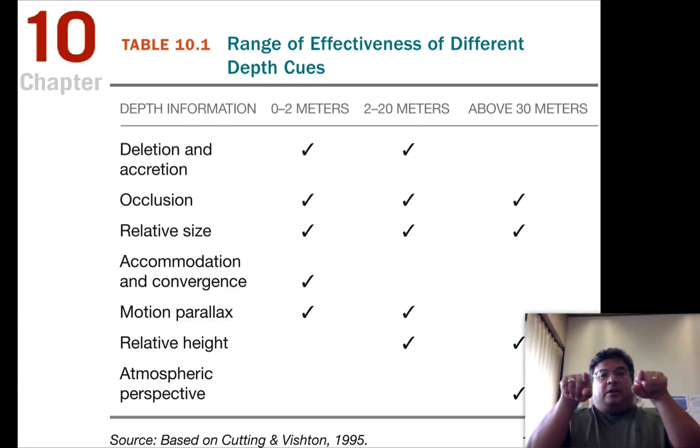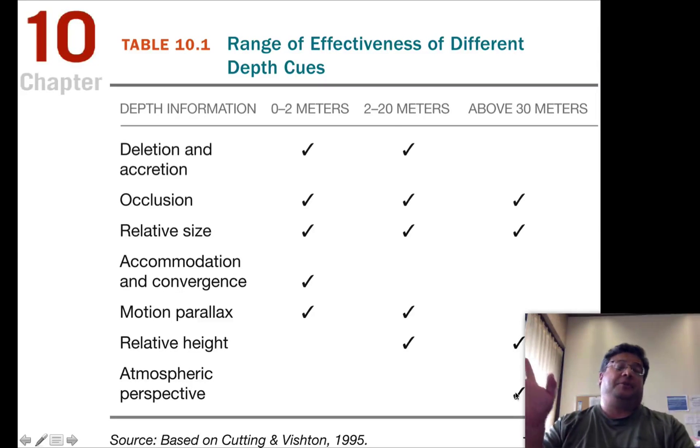Because that only really is telling us, the amount our eyes are converging only tells us if something's really close or really far, in which case it's here. It's either here or it's not. Motion parallax, we use that, like when you're driving. Relative height, we use that. And then above thirty meters, anything that's more than about seventy feet away, we use relative height, occlusion, relative size, and of course, atmospheric perspective.